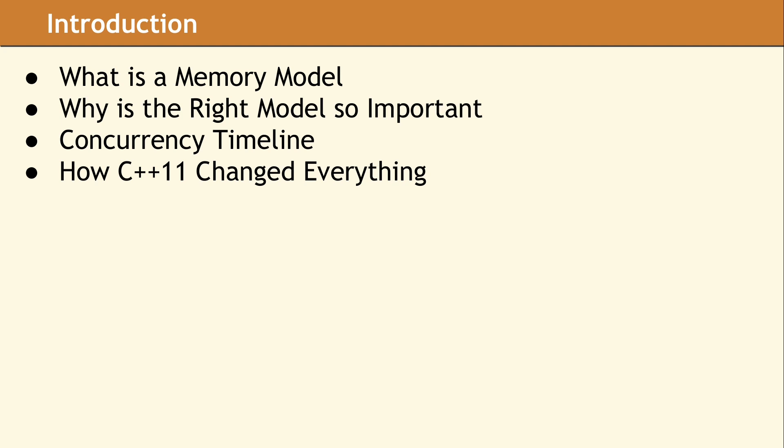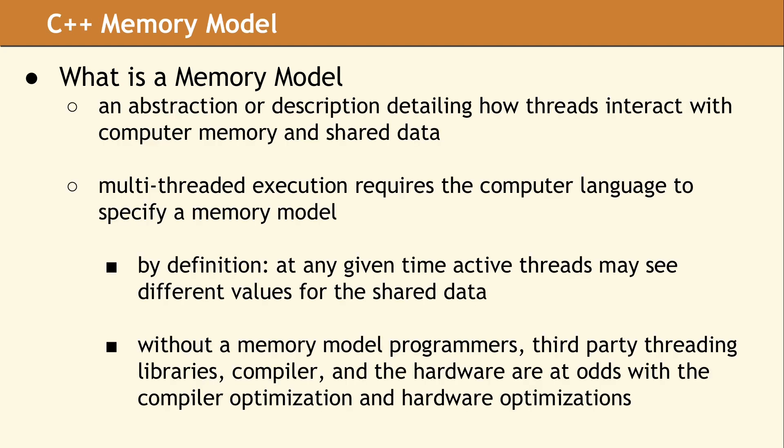The group of people who ushered in the C++ memory model started by looking at the Java memory model as a possible solution. In this talk, we will highlight what they discovered and how the C++ memory model was developed. At a basic level, the idea of a memory model is to describe how threads should interact with shared data. If you are writing a single-threaded program, keep in mind it still has a main thread. This type of program does not have shared data, so the memory model does not provide any benefit.